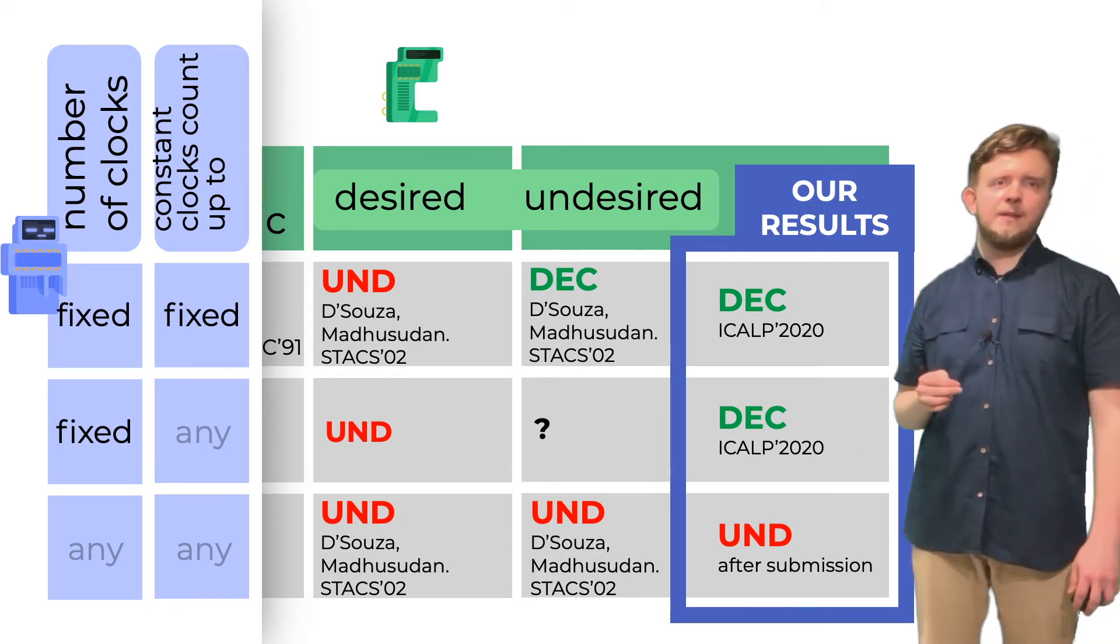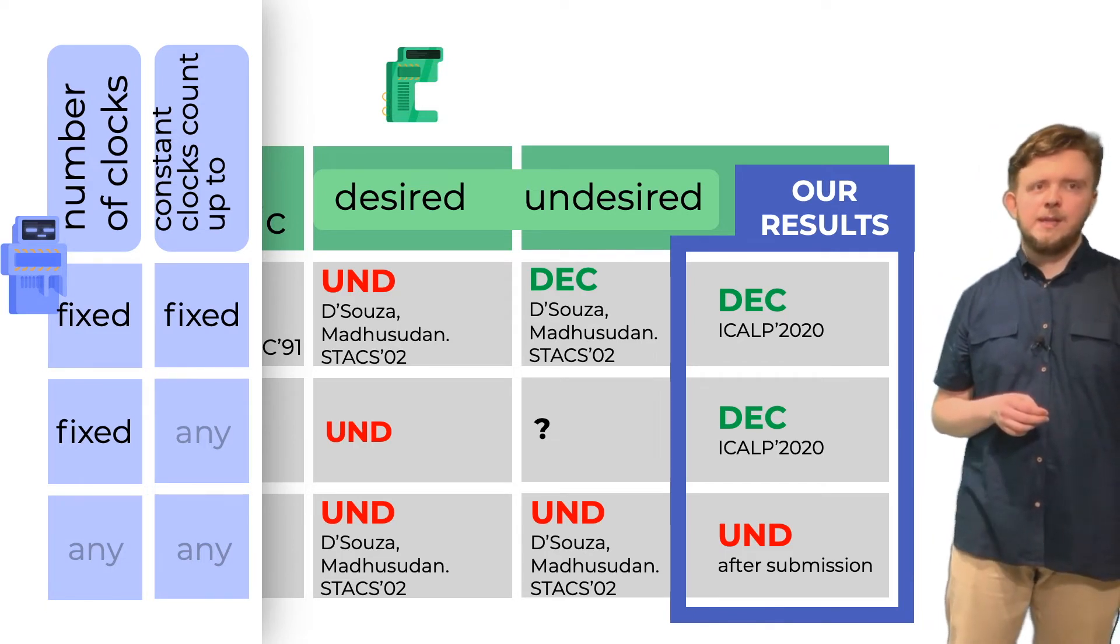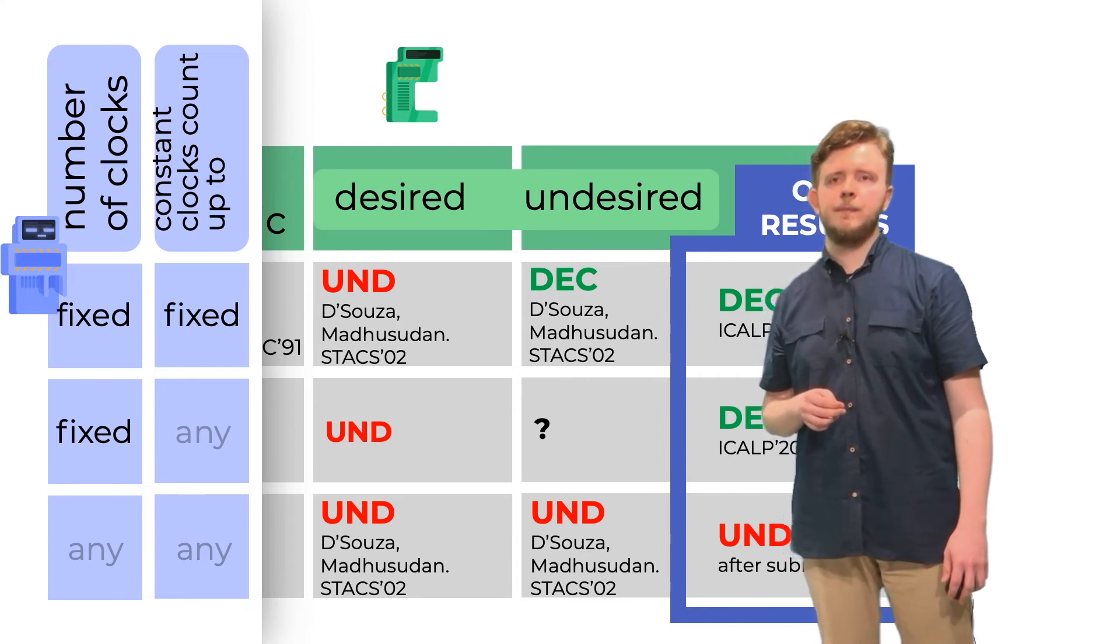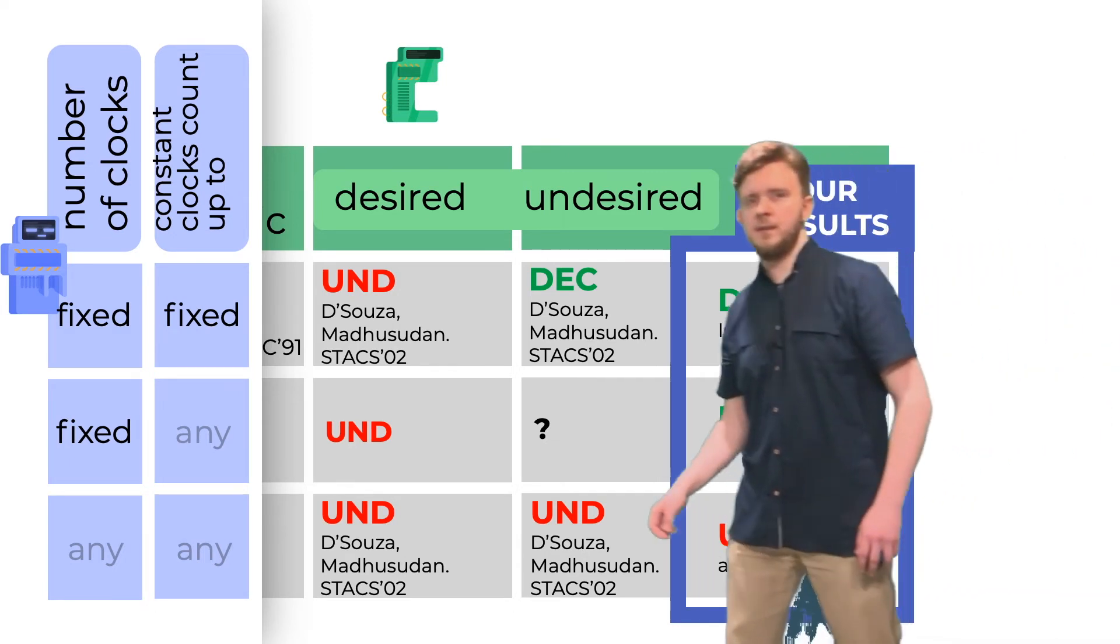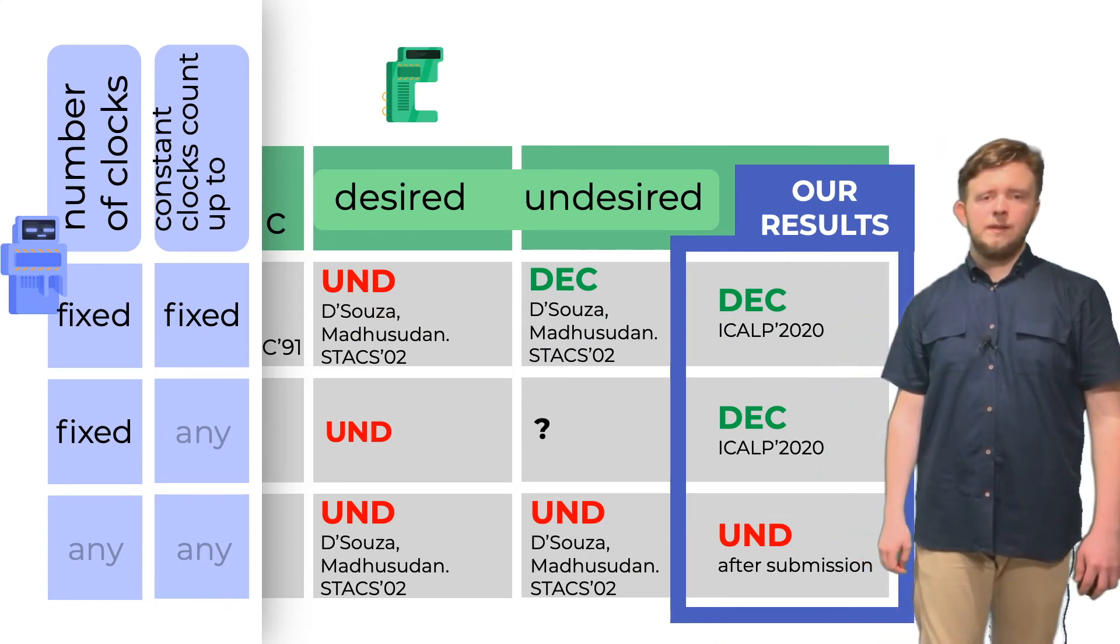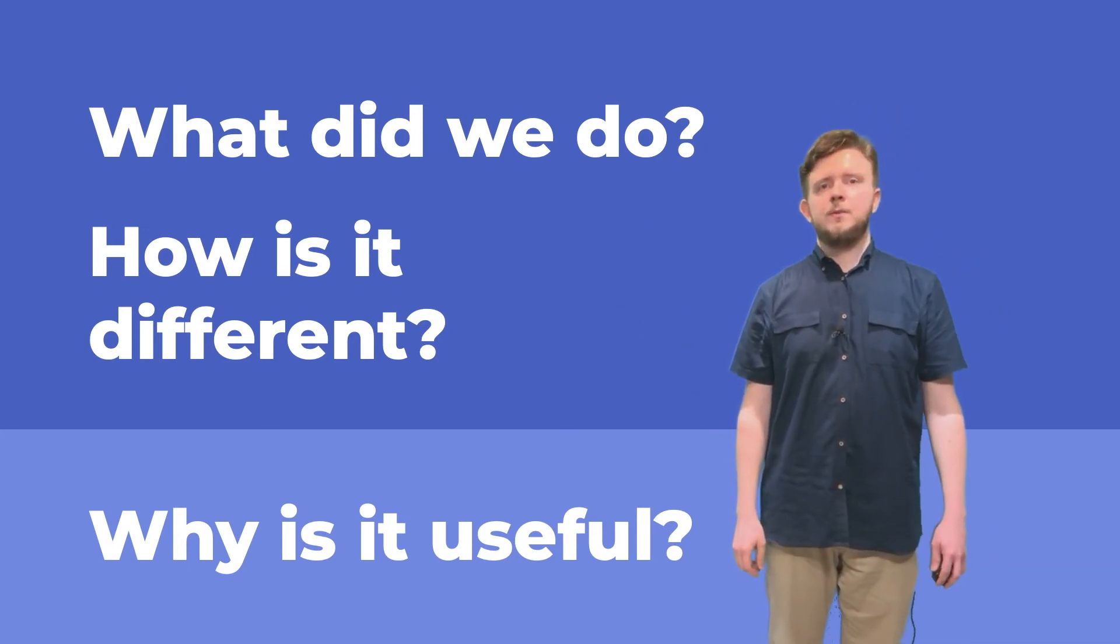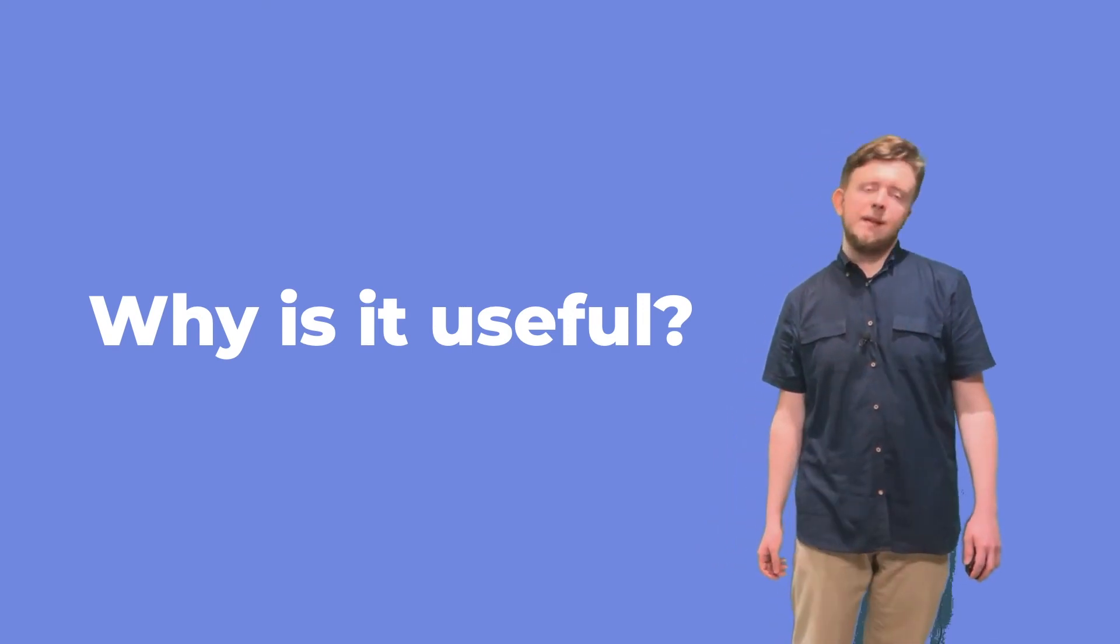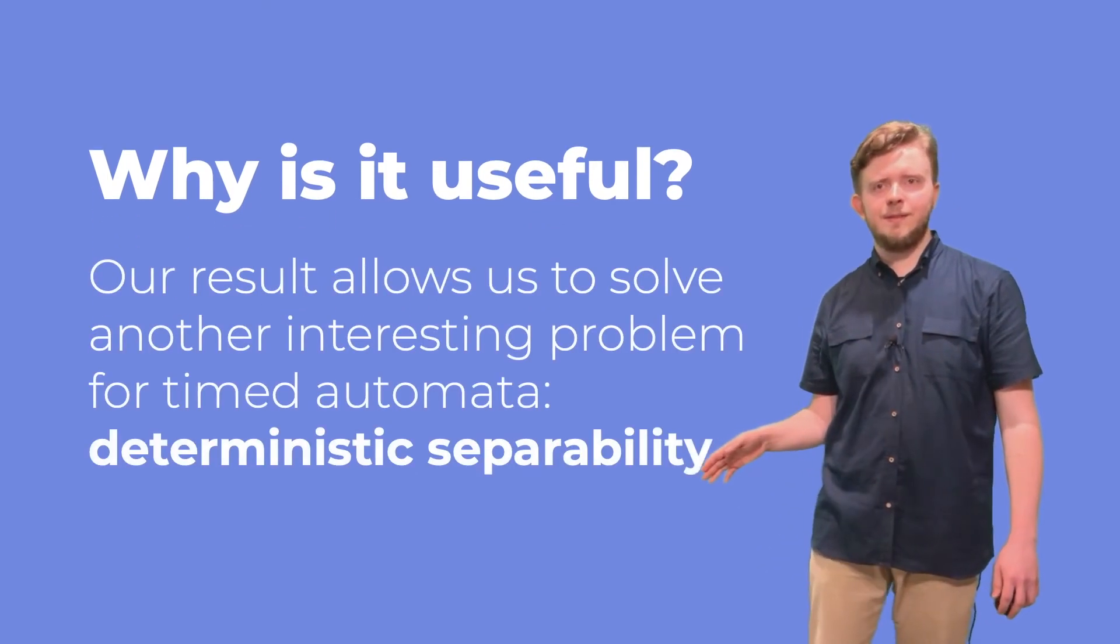Finally, our most important contribution is here. We are able to decide the winner and synthesize a controller when only the number of clocks is fixed, but the constant the clocks can count up to is arbitrary. This is an important novelty, because earlier those two numbers were either both fixed or not. So, this concludes the answer for the two questions here. Let me now tell you why we think our results are interesting.